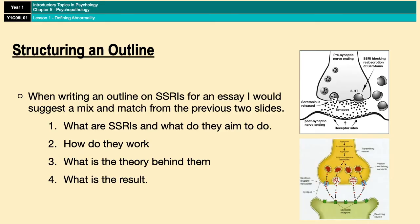If three to four months down the line SSRIs haven't been successful, then you can up the dose or try a different antidepressant. Or you could try a different type of drug — for example, a benzodiazepine.